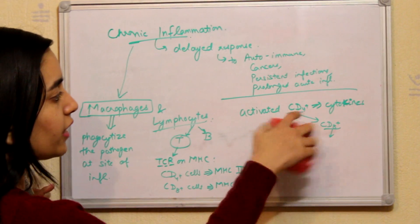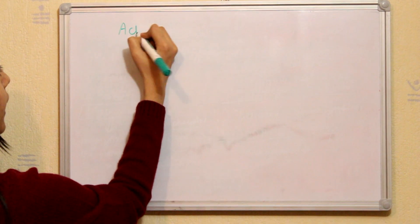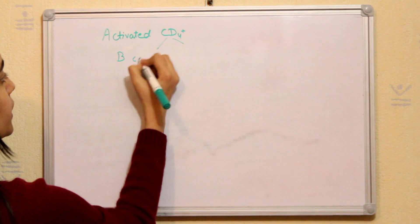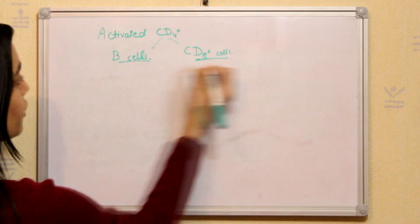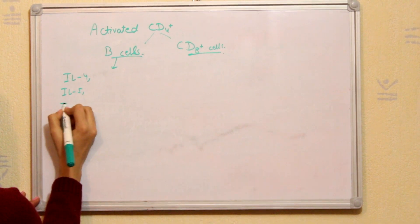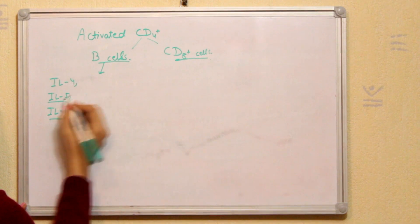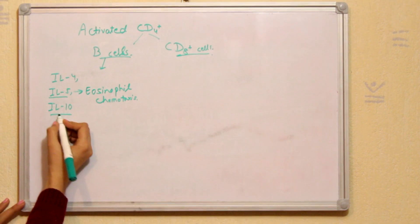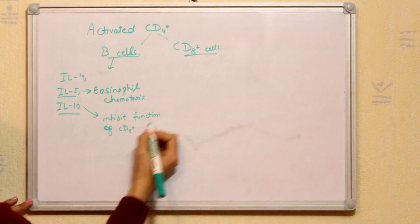I'll erase all of it so that I can continue this part through the whole board. So as we said, activated CD4 plus cells make the B cells and CD8 plus cells to release some interleukins, which are interleukin 4, interleukin 5, interleukin 10. 5 and 10 here are very important. The main function of interleukin 5 is eosinophil chemotaxis, and the main function of interleukin 10 is to inhibit function of CD8 plus T cells.